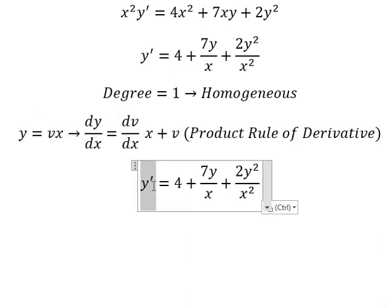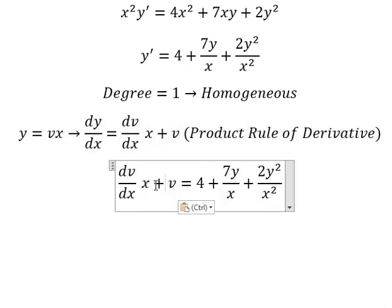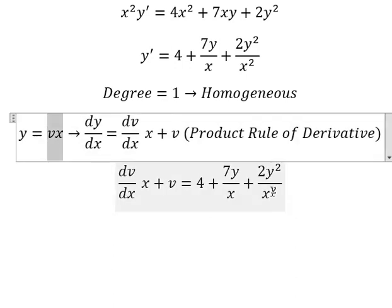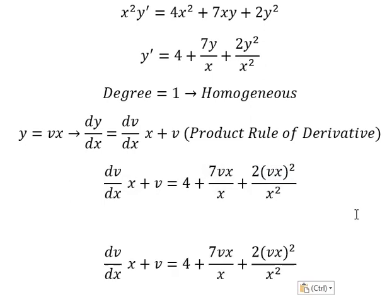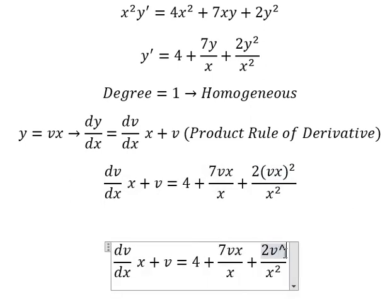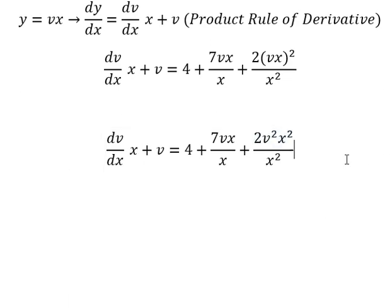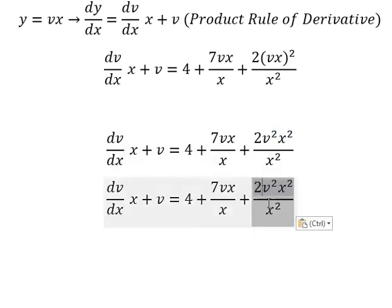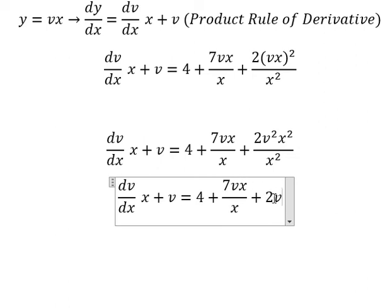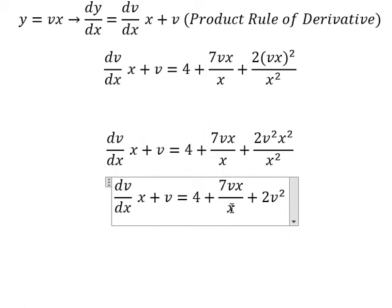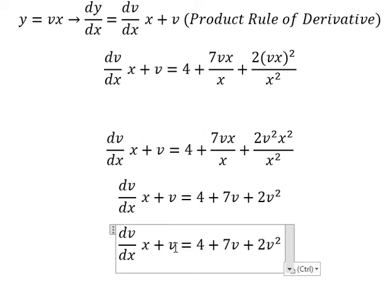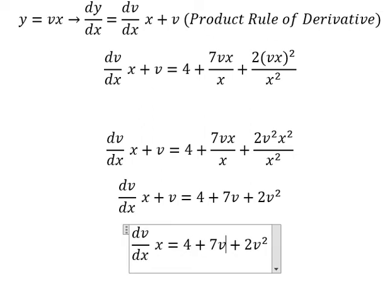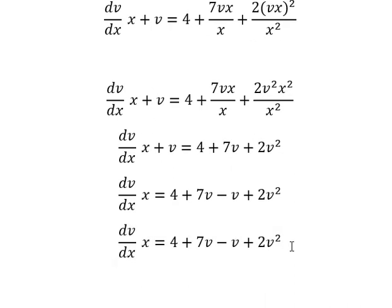So this one we change by this one. y we change by vx. This one you got about v, this one you got about 2v x square. x divided by x, you got about 7v. v we put on the right, you got about negative v. 7v minus v, you got about 6v.